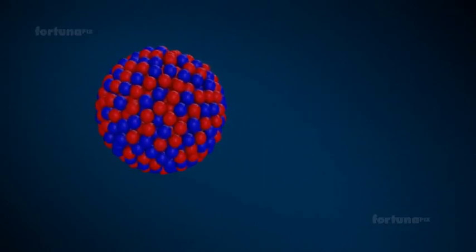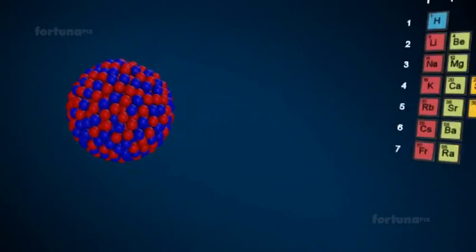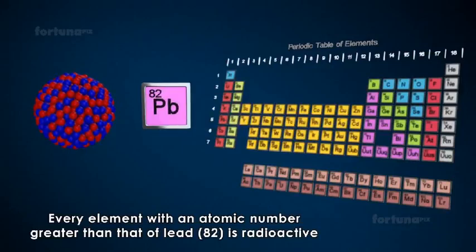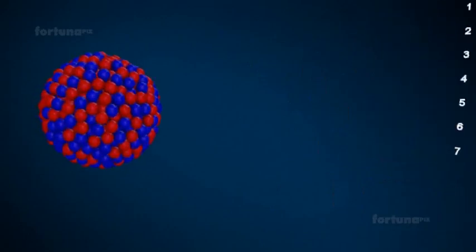There is a correlation between radioactivity and the atomic number of an element. Every element with an atomic number greater than that of lead, 82, is radioactive. An unstable nucleus will attempt stability by undergoing the process of radioactive decay.